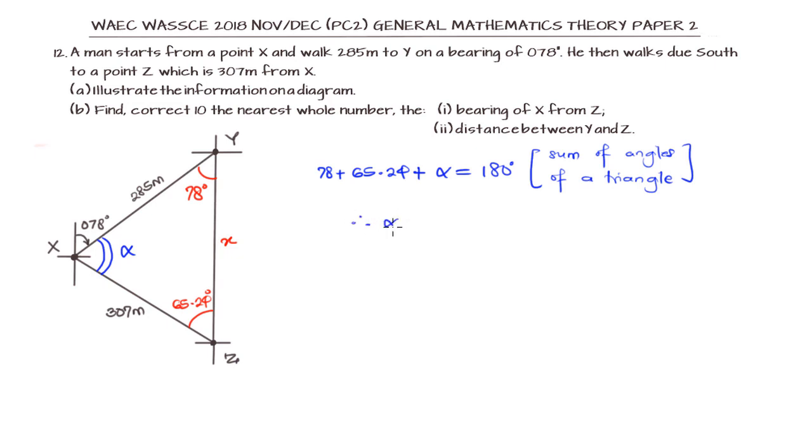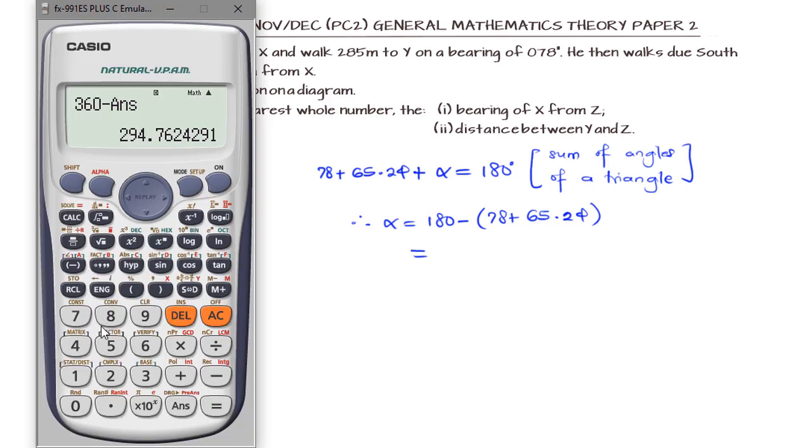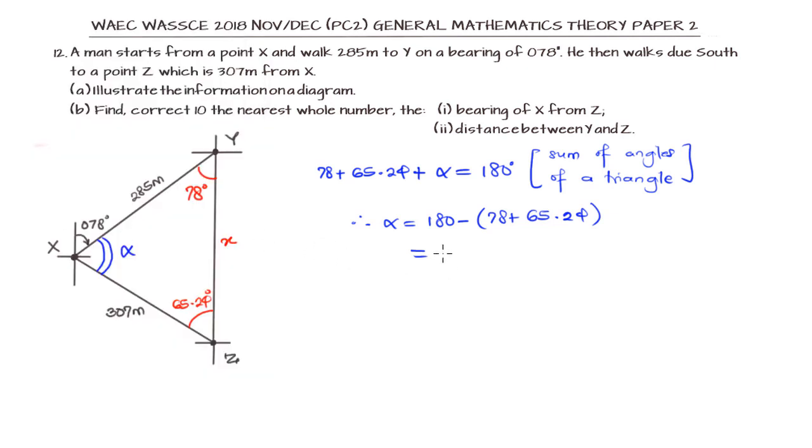We can evaluate the value of alpha. Alpha will be 180 minus (78 plus 65.24). Using our calculator, that's 36.76 degrees.